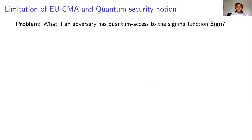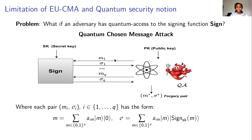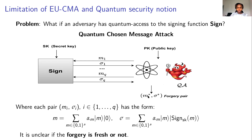What happens if an adversary has quantum access to the signing function? Instead of querying classical messages, the adversary queries messages in superposition and receives signatures also in superposition, then uses that information to come up with a classical forgery. In that case, it is difficult to distinguish between classical messages and queried messages, so the notion of a fresh forgery becomes unclear. Therefore, the existential unforgeability under chosen message attack is no longer meaningful.